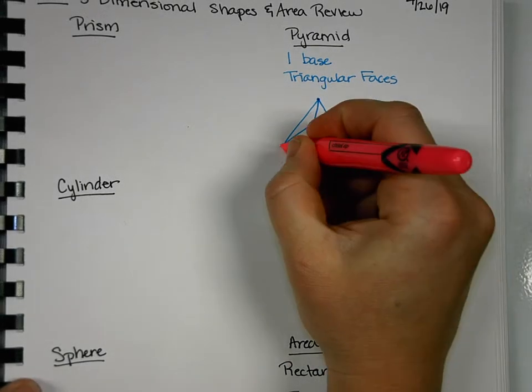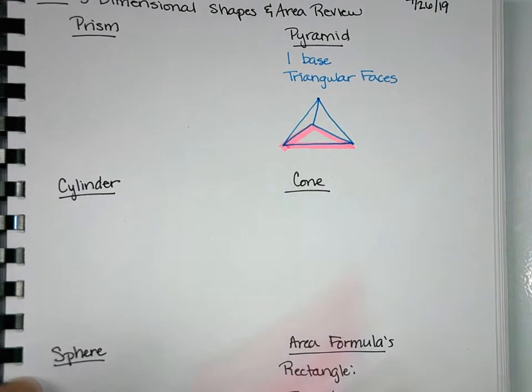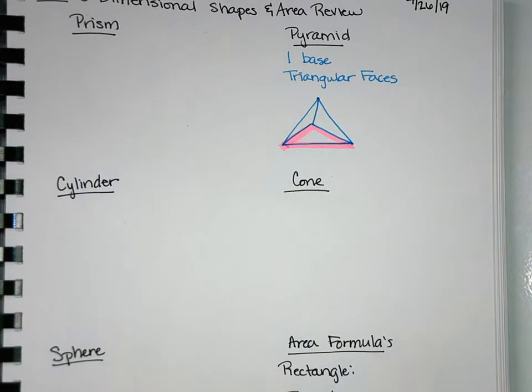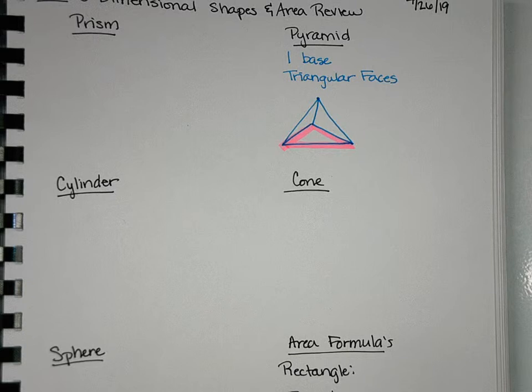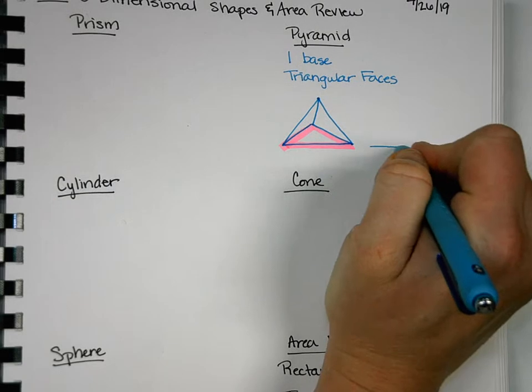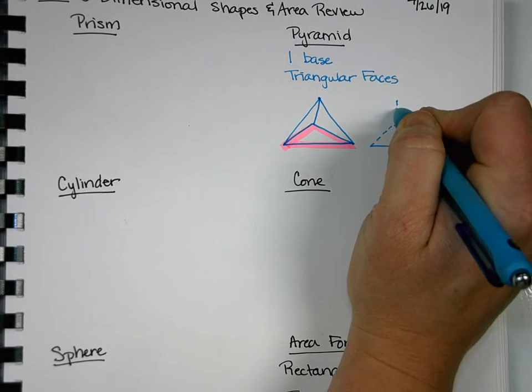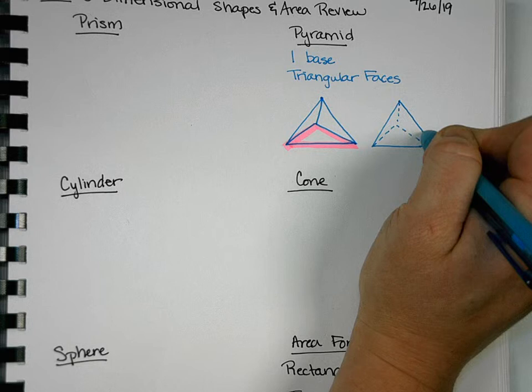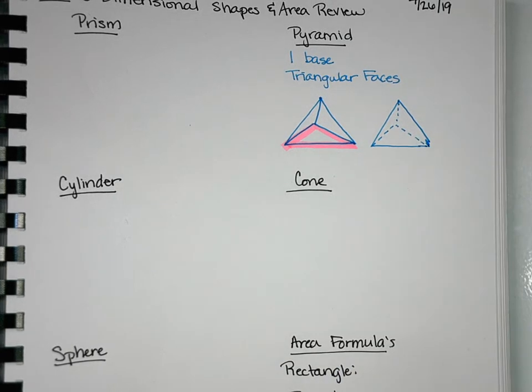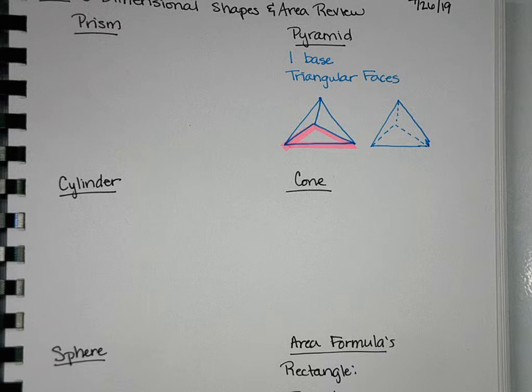So your base would be this right here. Some people like to do dotted lines for the things that are in the background that aren't in the forefront. So if you're one that likes to do that, you would have dotted these two lines and dotted this one back here. So it kind of shows you which one's in the back and which one's in the front. You don't have to do that. Again, I'm not grading you on your art. As long as it's got the key features of a base that's a shape that I can tell what shape it is, and that it's all coming to a point, that's what matters.